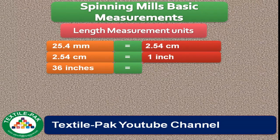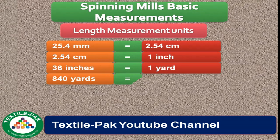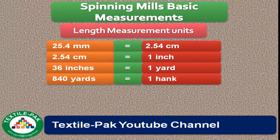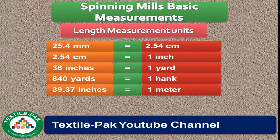36 inches equals 1 yard. 840 yards equals 1 hank. 39.37 inches equals 1 meter.